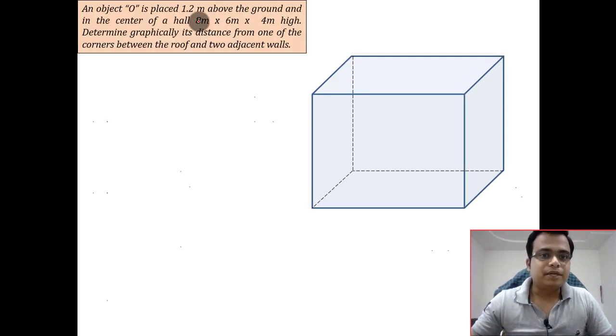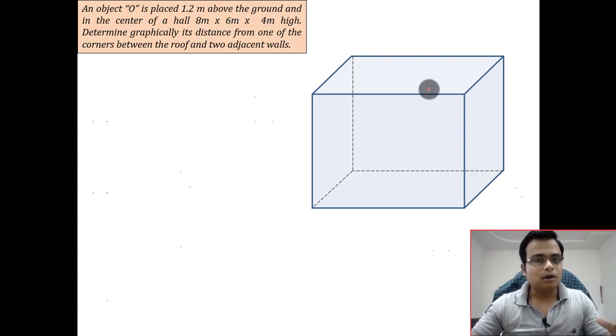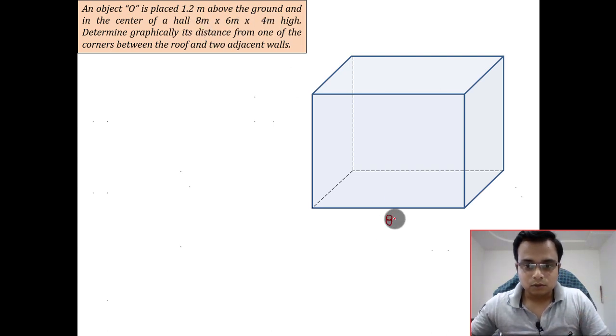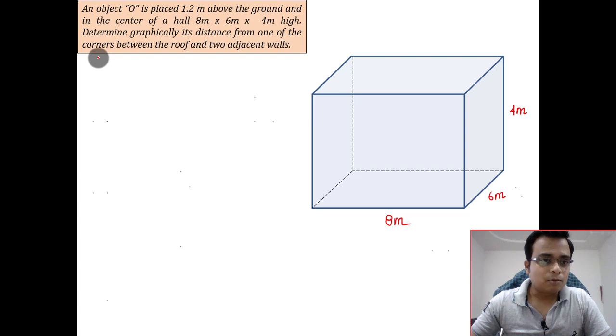An object O is placed 1.2 meters above the ground and in the center of a hall 8 by 6 by 4. This block can be assumed as a hall with dimensions 8 by 6 by 4 meters. Let me mark this: 8, this is 6 meters, and this is 4 meters.